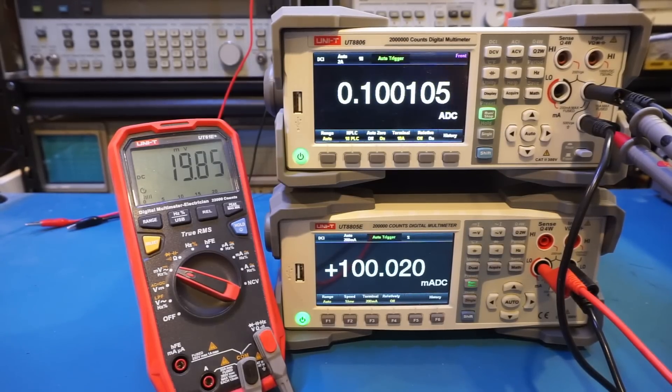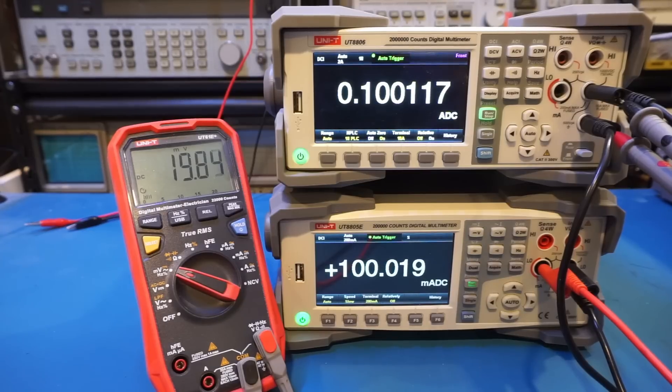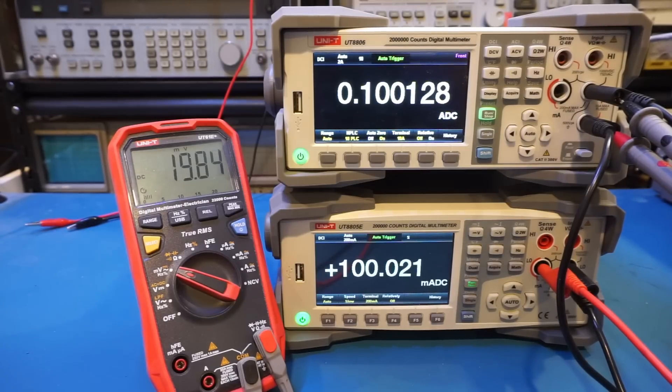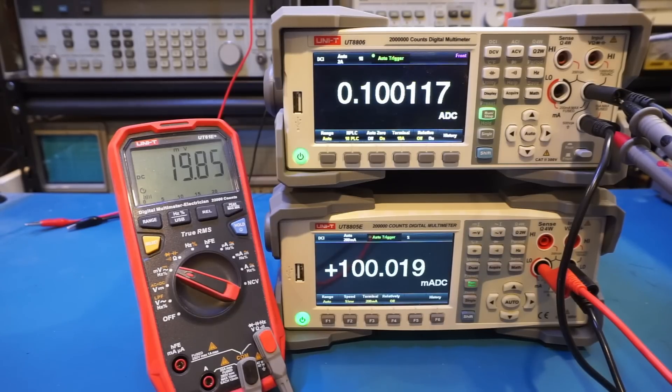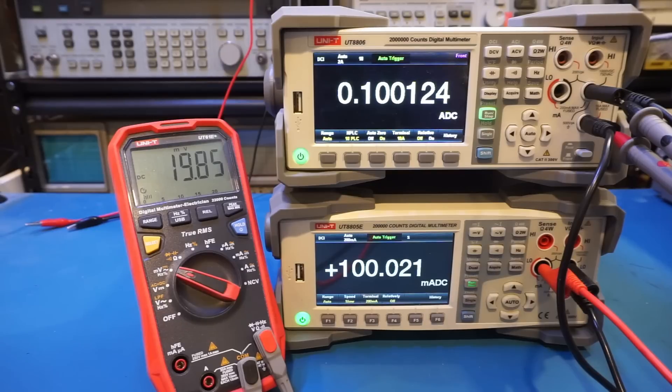And of course, there are applications simply require high precision measurement. One example is the matched resistors used for the voltage divider pair in a differential amplifier. In order to achieve high common mode rejection ratio, or CMRR, the resistor values must be precisely matched. And this is where a high counts multimeter comes handy.